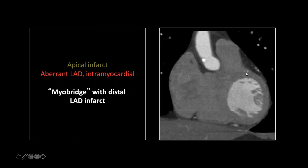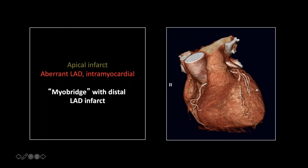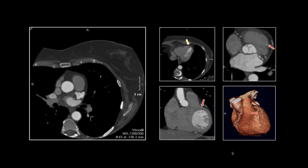This is what's called a myobridge — it's more apparent right here. The early segment of the proximal LAD is dipping down into the myocardium itself, instead of sitting on top of it like a good coronary should. This is one of those rare instances where the surface-shaded display really helps you — you can see it diving down into the substance of the myocardium. That short segment is obviously at risk: every time the heart contracts, that myocardium surrounding that coronary is contracting on it and pinching it off.